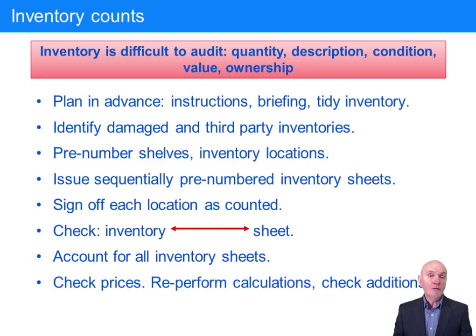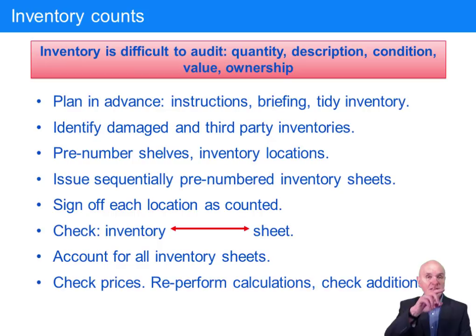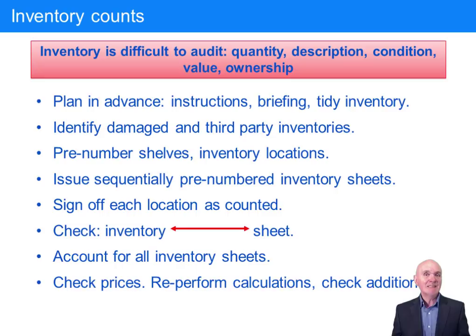When pre-numbering shelves and putting spaces on for people to sign, you'll also have spaces to note down the quantity of inventory found, some sort of description of the inventory, and ideally a unique locator — for example, warehouse set of shelves number five, shelf number two — so that later on, if a query arises about that stock, we can go and find where the actual stock has been located.